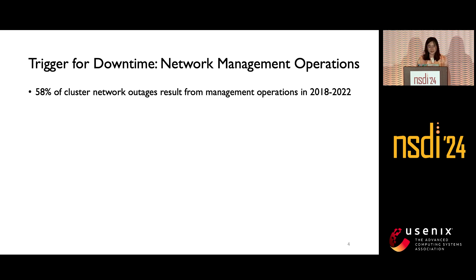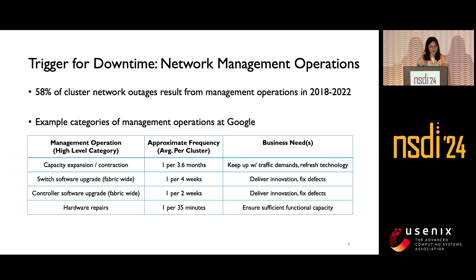However, Google has business needs that require touching the network on a pretty much continuous basis. This table shows example categories of management operations at Google. Looking at the middle column, it shows the average frequencies these need to be conducted per cluster. Imagine there are so many clusters in Google — the frequency of operational changes is really high.